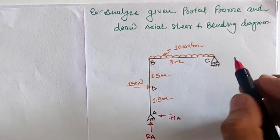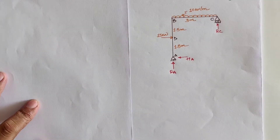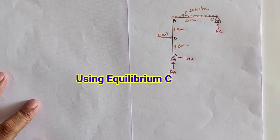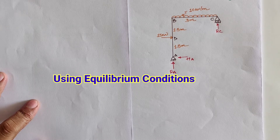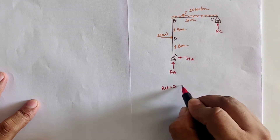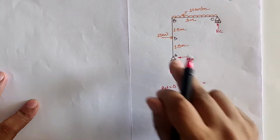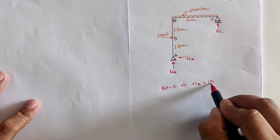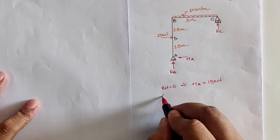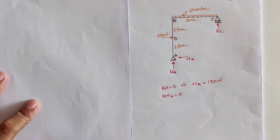At location C, due to the roller support, the vertical reaction is RC. Using the equilibrium condition of a determinate structure, sigma H equal to zero gives us the horizontal reaction HA as 15 kilonewton.